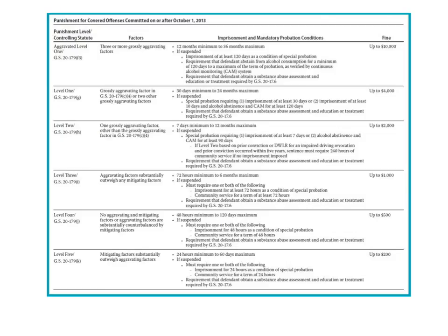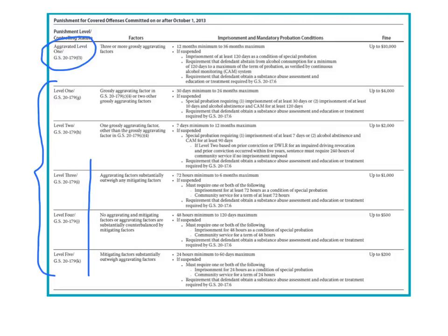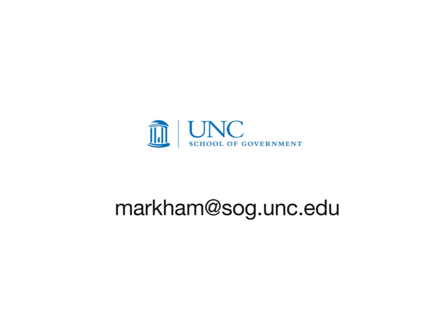All of the rules discussed in this video technically apply to any impaired driver who gets an active sentence, from Level 1 all the way to Level 5. As a practical matter, lower-level defendants often get probationary sentences, and even when they get active sentences or have probation revoked, their sentences are so short — especially accounting for good time — that parole doesn't become a factor. The aggravated Level 1 rules are so different that I'll do a separate video covering those. I hope you find this session helpful, and feel free to contact me with any questions. Thanks.